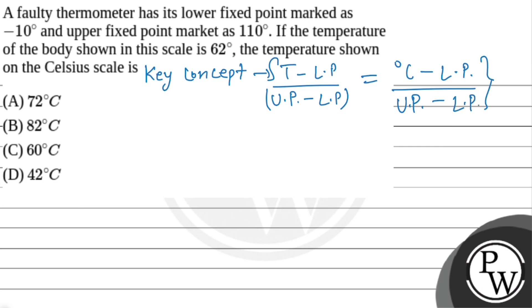Now, let's put our values. The temperature T in the faulty thermometer is 62 degrees minus lower point is minus 10 upon upper point is 110 minus lower point is minus 10 again. It will be equal to degree Celsius. Now, it will be x minus lower point of Celsius scale that is 0 degrees Celsius upon upper point in Celsius scale.